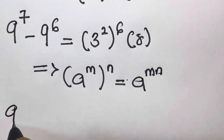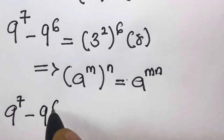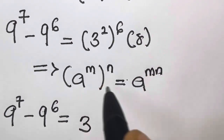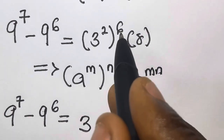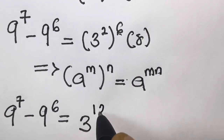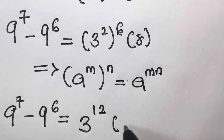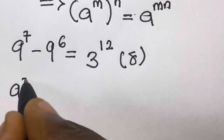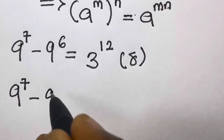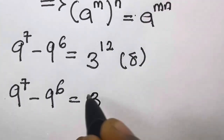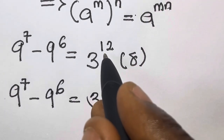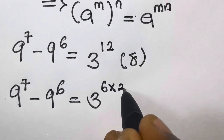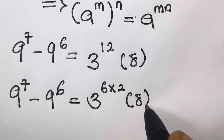Now let's apply this. We have 9 raised to power 7 minus 9 raised to power 6 equals 3 raised to the power — applying the product power law, we say 2 times 6, and that gives us 12 — then multiplied by 8.